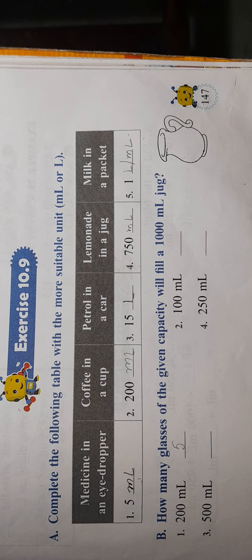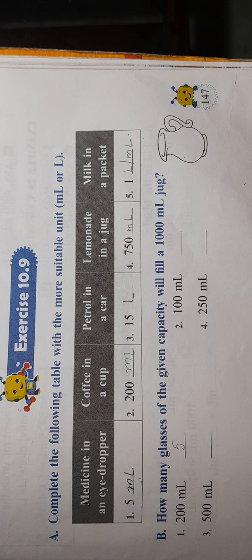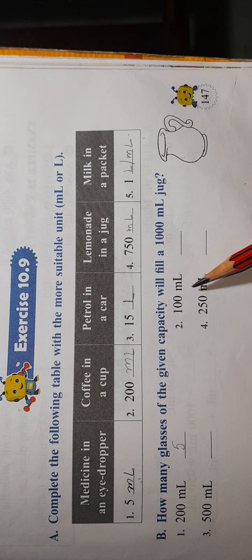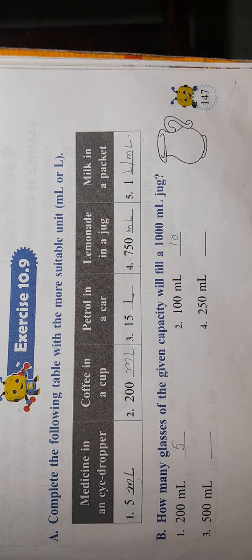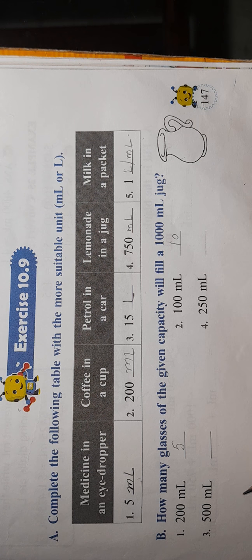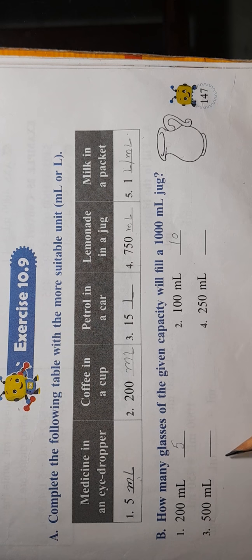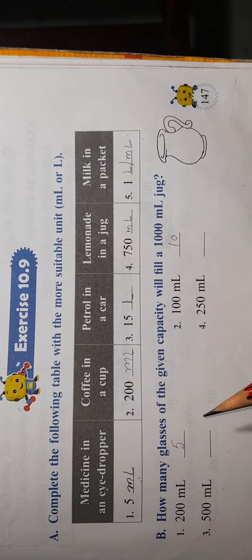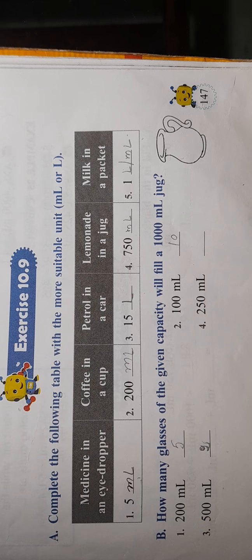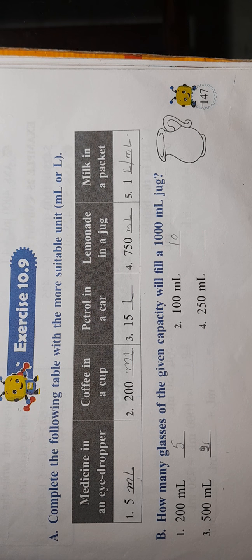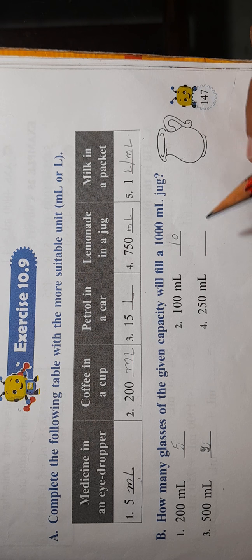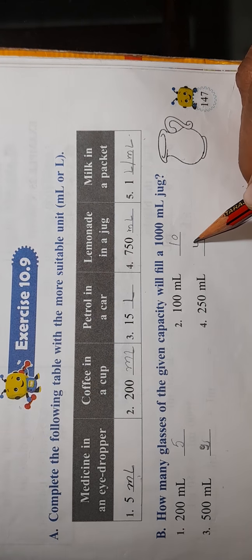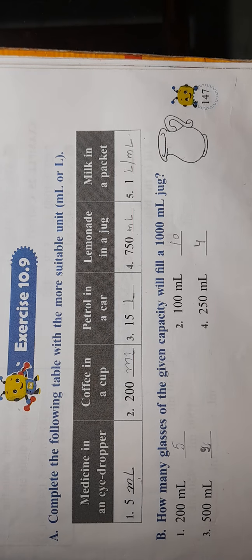Second is 100 ml, so here we fill 10 glasses. In 500 ml, 500 ml plus 500 ml equals 1000 ml, so here we fill only two glasses. And 250 plus 250 plus 250 plus 250 equals 1000, so here four glasses are filled. Right?